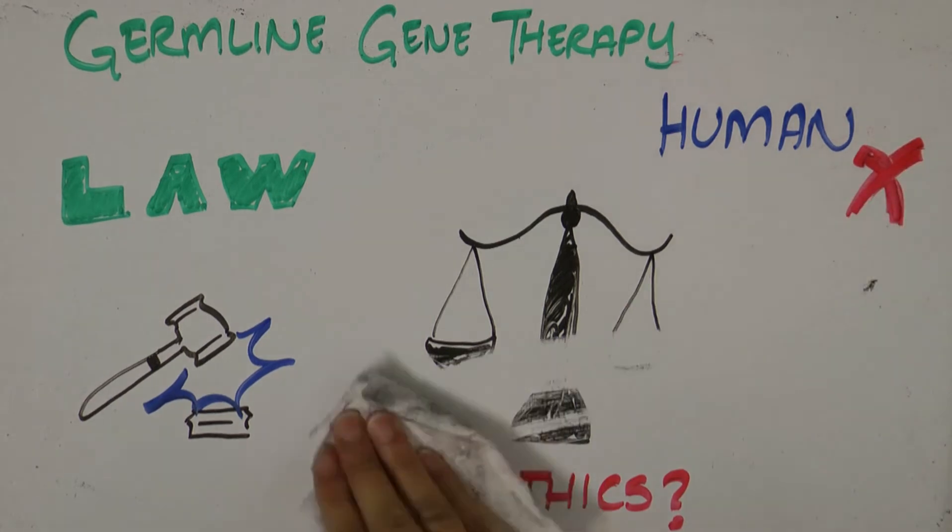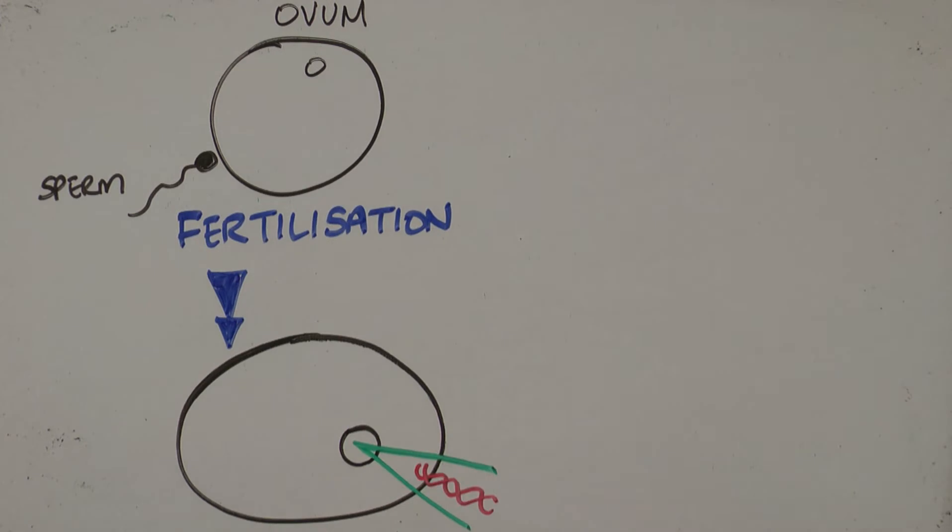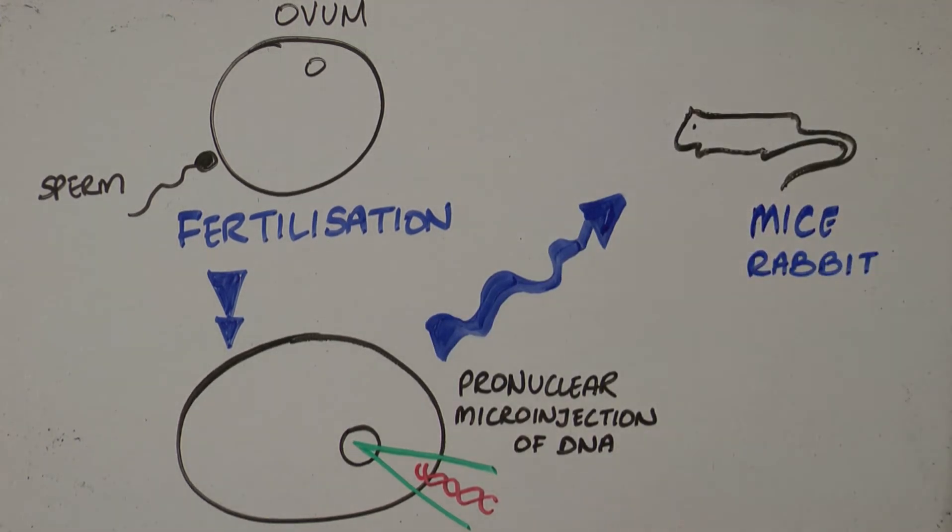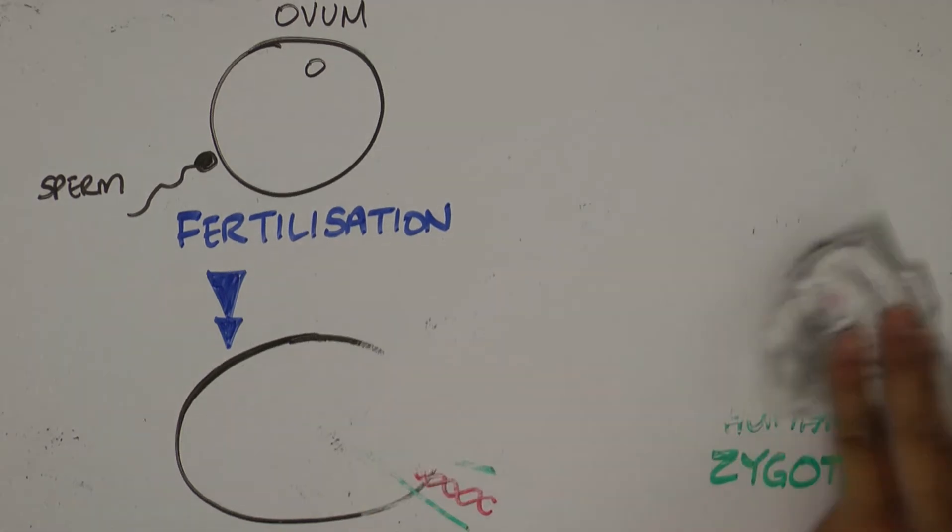However, studies have been conducted. Pro-nuclear micro-injection has been used successfully to generate genetically modified mice, rabbits and other farmyard animals. The success observed on animal models teases the great potential of germline gene therapy for human applications, be it therapeutic or even enhancement.